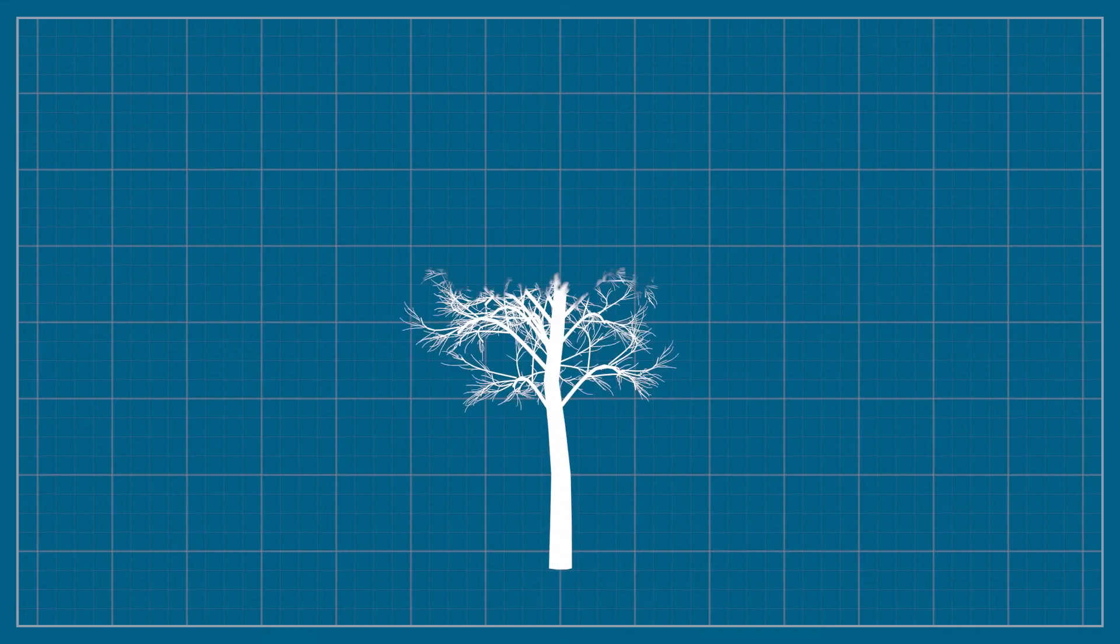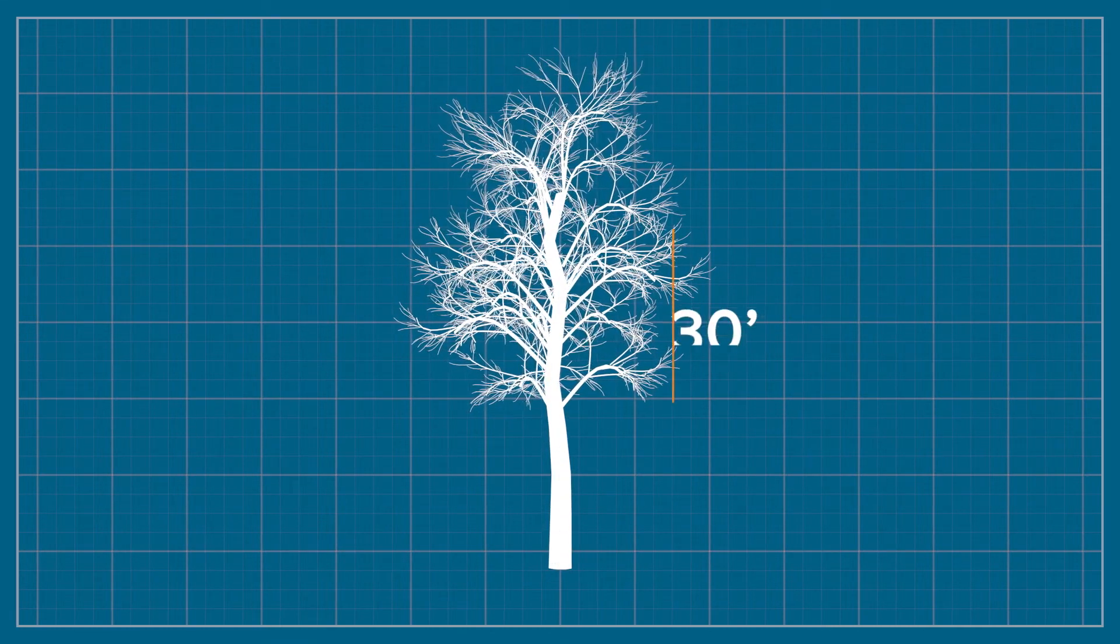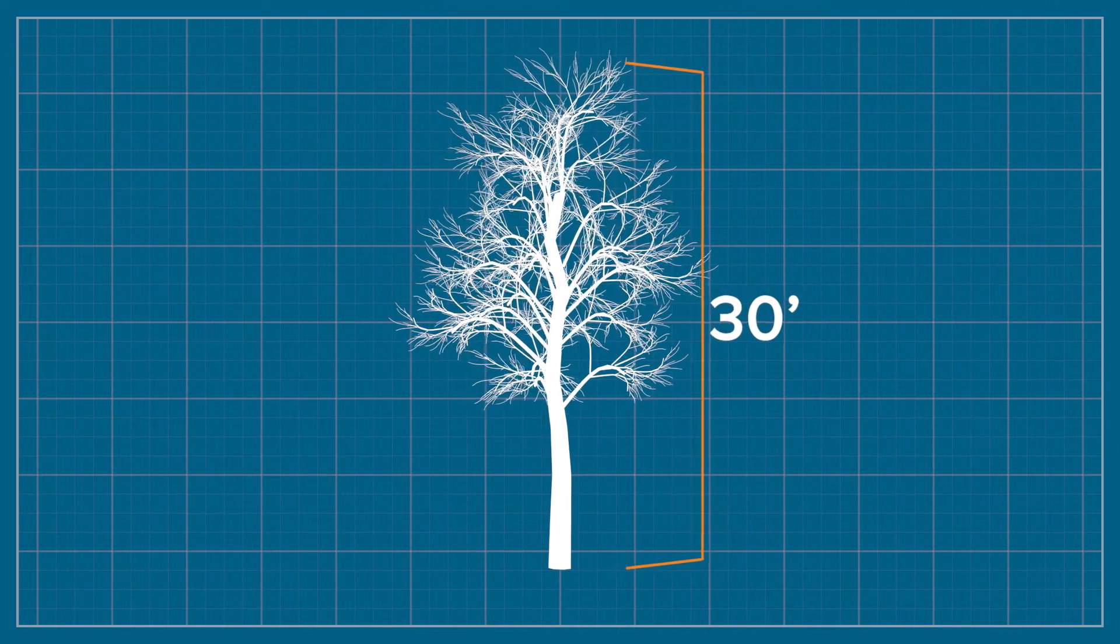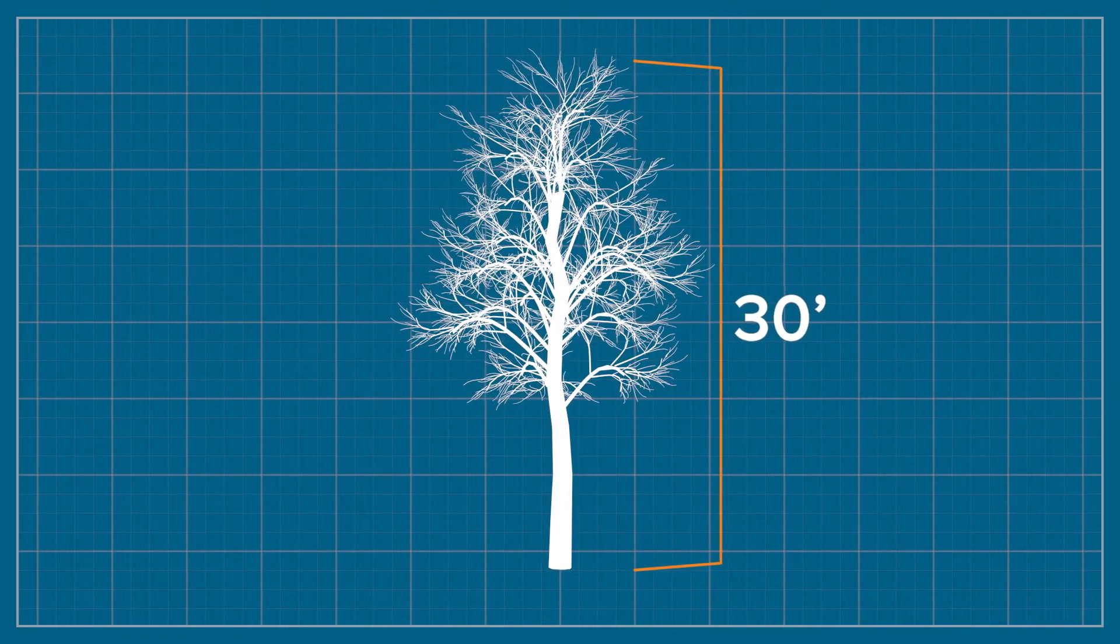When we're done with that, we're going to move on to how much labor it actually takes to install those light sets on a tree. In this example, we're going to examine a 30-foot tree, from the base of the trunk to the top, roughly 30 feet. The other measurement I want to focus on is the average trunk diameter.